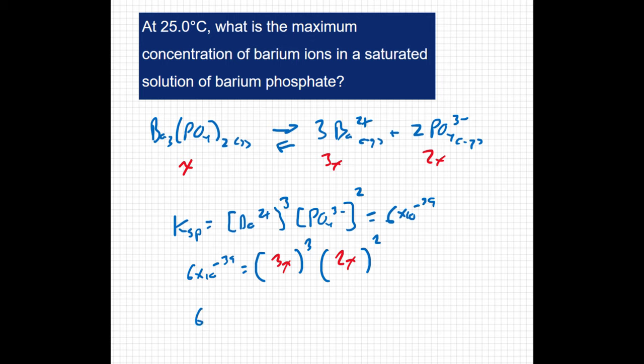I have 6 times 10 to the negative 39 equals, well, 3X cubed is the same thing as 27X cubed, and 2X squared is really 4 times X squared. So this whole term equals 108X to the fifth power.